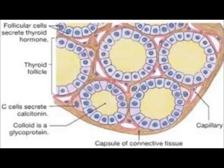Thyroid hormone production takes place using iodine, which is absorbed from the intestine when we eat food. The iodine enters the blood and, along with sodium, enters the follicular cells. The follicular cells have already secreted thyroglobulin into the colloid, and the iodine and sodium then pass through into the colloid.